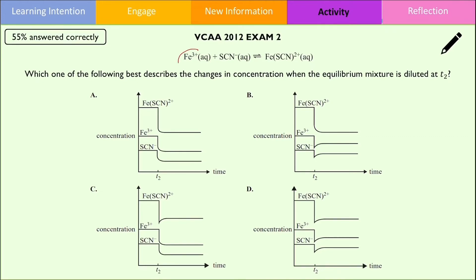As a result, we can eliminate options A as well as option C, since their concentration time graphs do not support this. Because equilibrium is favouring the reverse reaction, the Fe2+ will be consumed and should thus decrease, hence B is the correct answer.